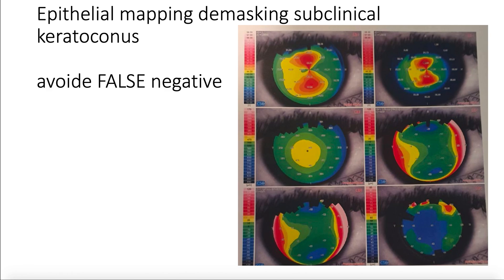The epithelium plays a role in masking subclinical keratoconus. I will compare this with accommodation. If we take an eye with +6 hyperopia, during refraction you can find 0 diopters because of accommodation. But when you use cycloplegia, you will unmask the high hyperopia. Similarly, the epithelium will try to mask the keratoconus. When we see keratoconus on the anterior surface, it means the masking capacity of the epithelium has been exceeded.